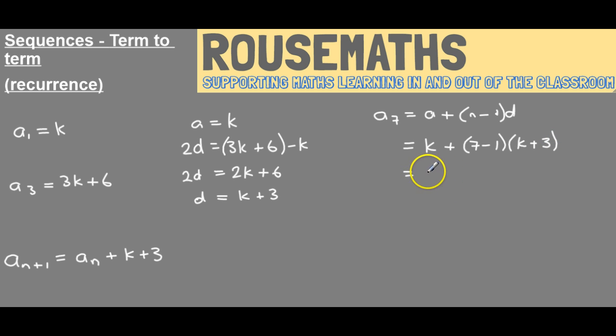And to find the seventh term, if we just multiply that out, we get this, 7k plus 18 is the seventh term.